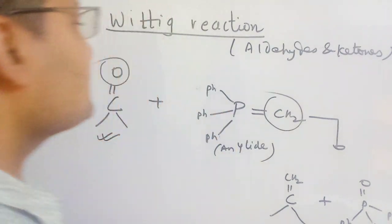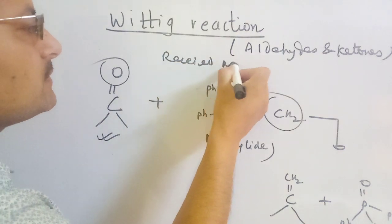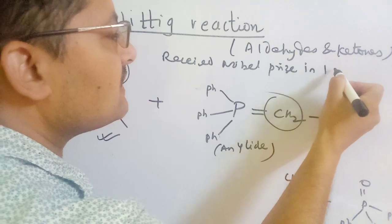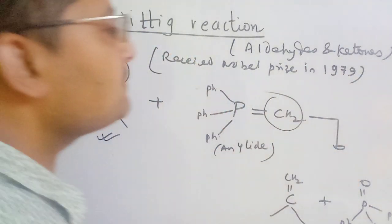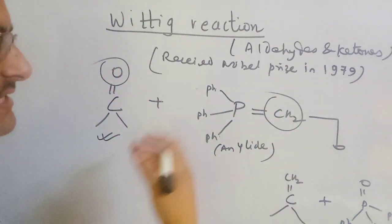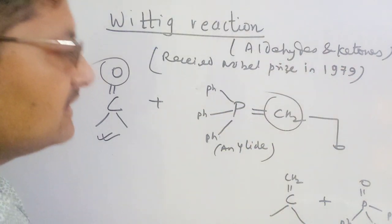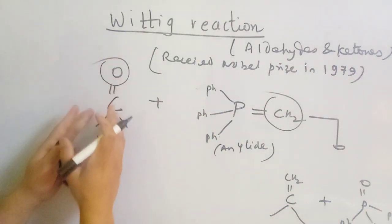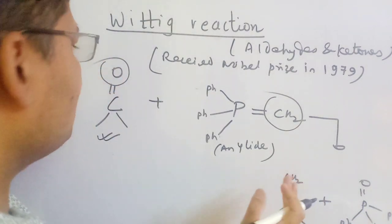This reaction is very important because it received the Nobel Prize. The Nobel Prize was awarded to Wittig in 1979. This reaction is very important because we can directly convert the carbonyl group directly into alkene.